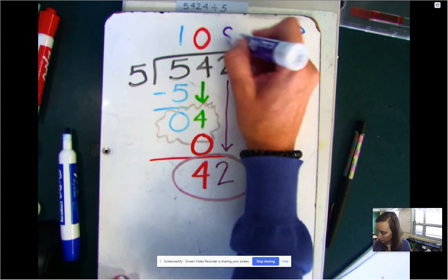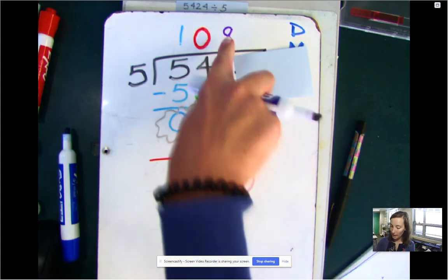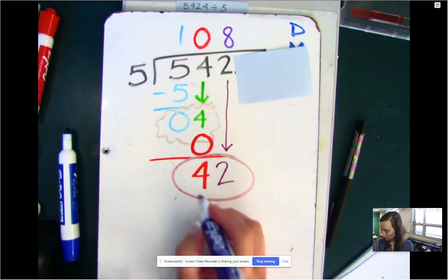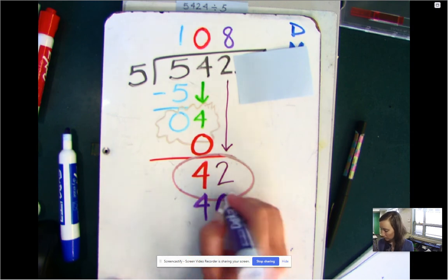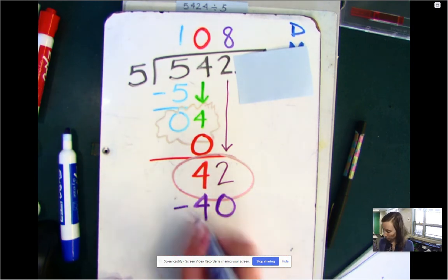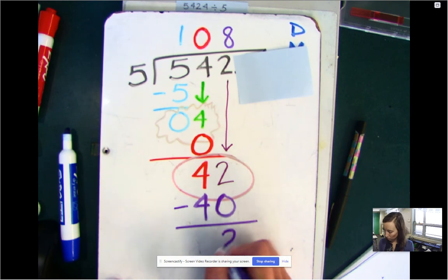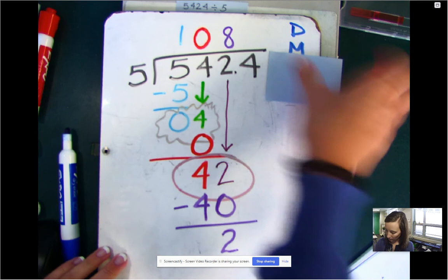Five goes into 42 eight times. So there's my divide. My multiply eight times five is 40. Subtract. 42 minus 40 is two. And bring down. Here's my last number.